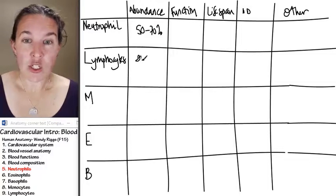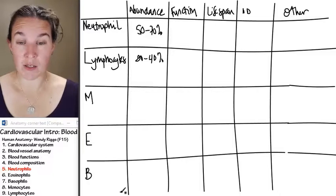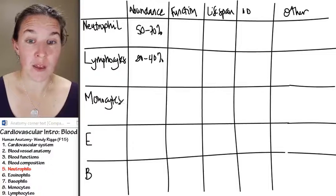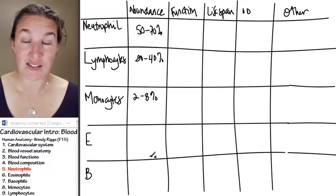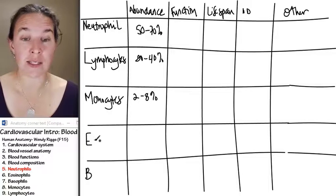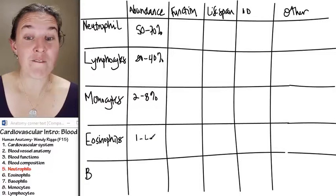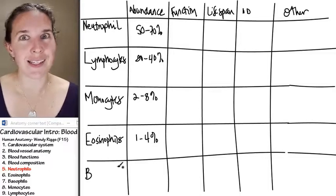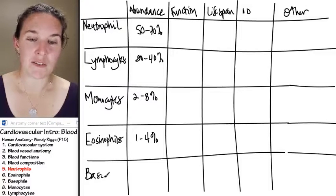Lymphocytes, there are between 20 to 40% of your white blood cells. Monocytes, we have between 2 and 8%. Eosinophils, between 1 and 4% of your white blood cells. That's the eating part of never let your monkeys eat bananas.